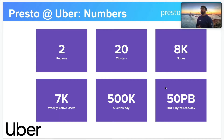Some quick numbers about Presto at Uber. The Presto clusters at Uber are spread across two regions. There are 20 clusters in total containing about 8,000 physical nodes. We have around 7,000 weekly active users. Our clusters run about half a million queries per day, reading about 50 petabytes of data from HDFS every day.